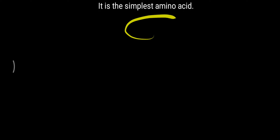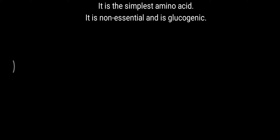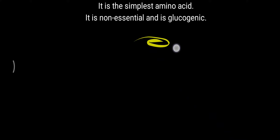Today's topic is about glycine. Glycine is the simplest amino acid and also a non-essential amino acid, meaning it is synthesized in our body. It is synthesized with the help of some carbon skeleton, derived mostly from serine and threonine, which are hydroxyl group-containing amino acids. Glycine is diverted to glucose molecule formation, so it is also considered a glucogenic amino acid. Remember: simplest, non-essential, and glucogenic.